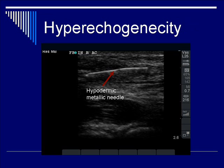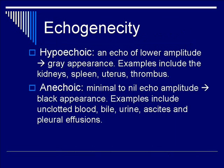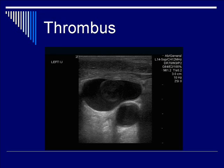There are two more variations of echogenicity to discuss. Hypoechoic describes an echo of lower amplitude compared to surrounding structures, with a gray appearance — typically describing soft tissues such as kidneys, spleen, uterus, and thrombus. Anechoic structures have minimal to nil echo amplitude, appearing black. This describes unclotted blood, bile, urine, ascites, and pleural effusions.